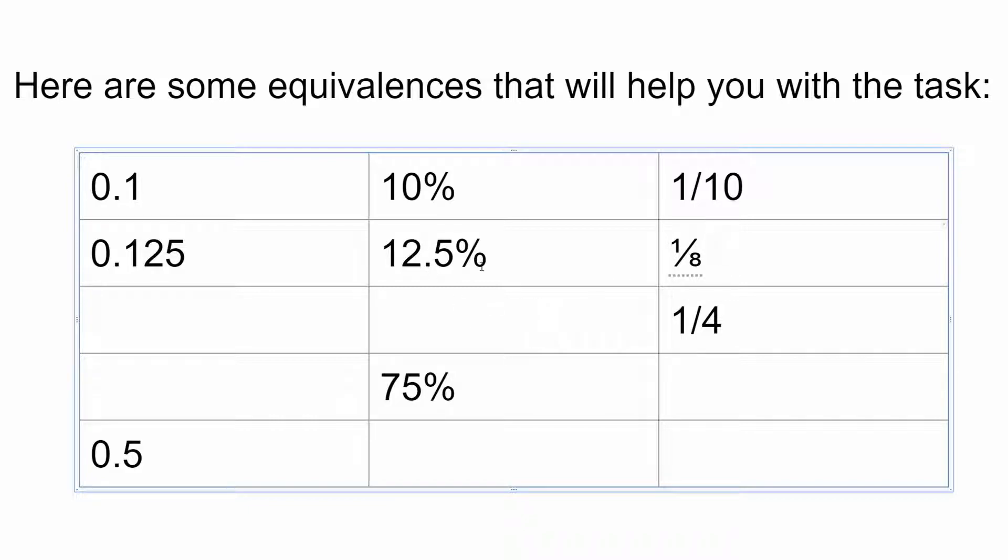Another way you could look at it is it's half of a quarter, and a quarter here is 25%, and half of 25 is 12.5. Again, we divide 25% by 100 and get 0.25.